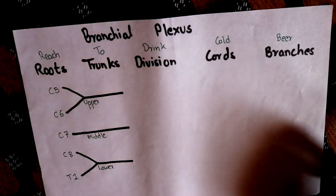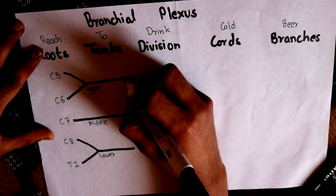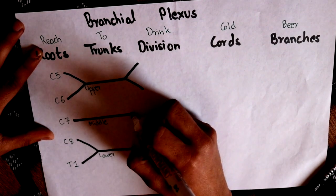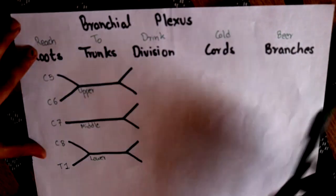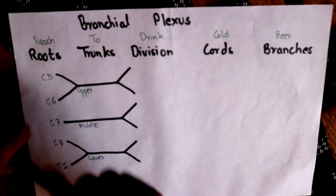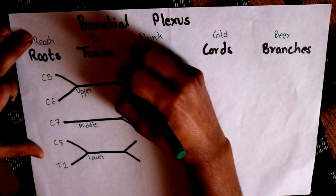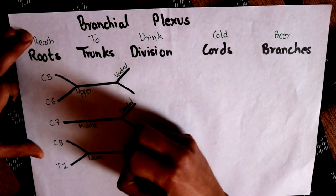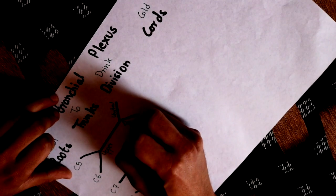Each of these trunks will give two divisions: the ventral division and a dorsal division. So these are all the ventral divisions, and these are all the dorsal divisions.